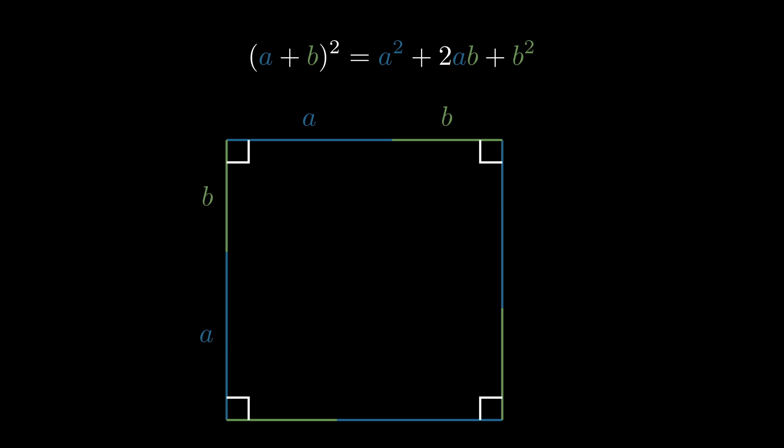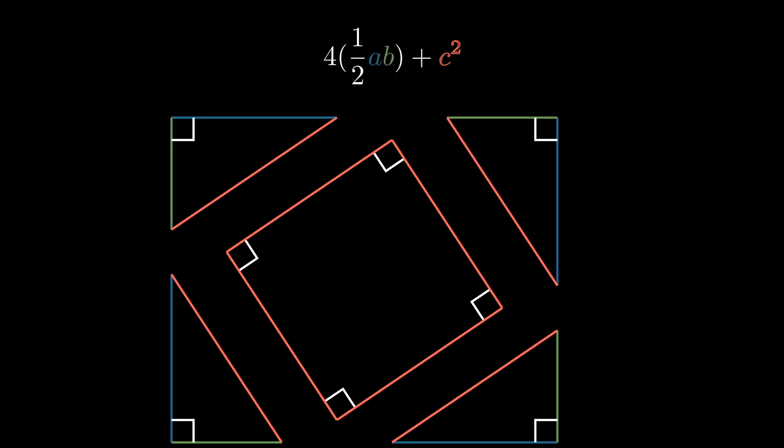But alternatively, we could have also found the area from our figure, by noticing that the area is just four copies of the area of each right triangle, plus the area of the red square.